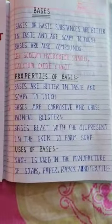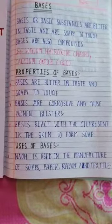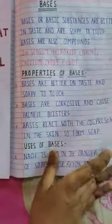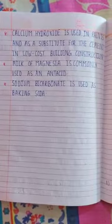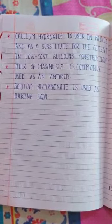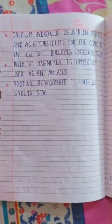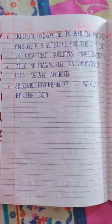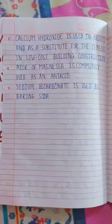Uses of bases: First, NaOH is used in the manufacture of soaps, paper, rayon and textile. Second, calcium hydroxide is used in paints and as a substitute for cement in low cost building construction. Third, milk of magnesia is commonly used as an antacid. Fourth, sodium bicarbonate is used as baking soda.